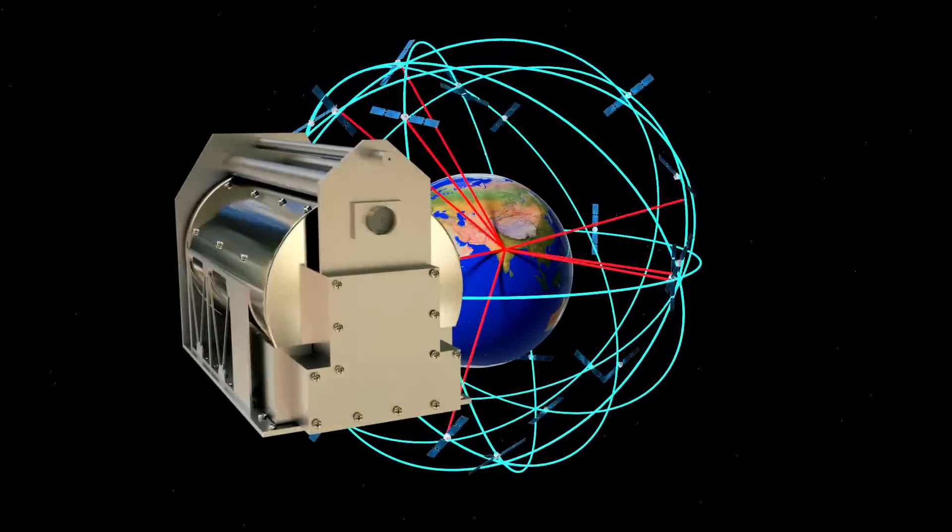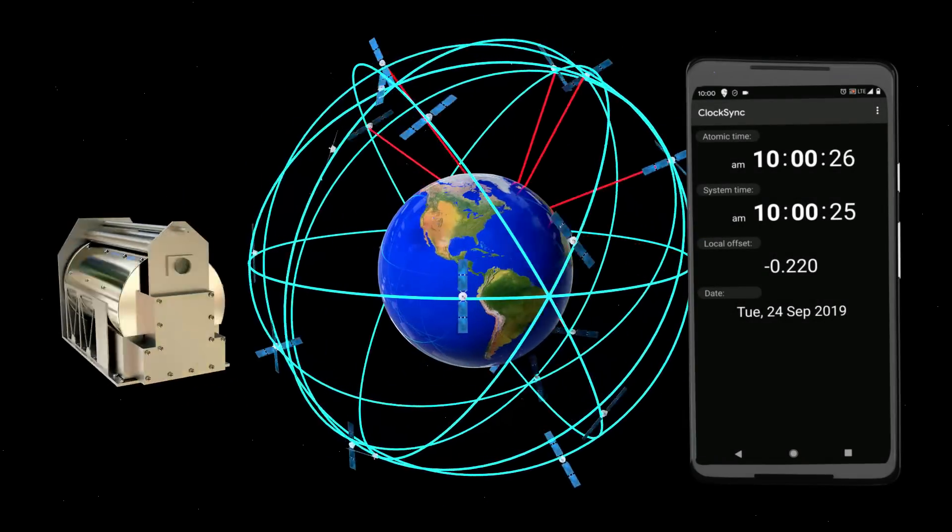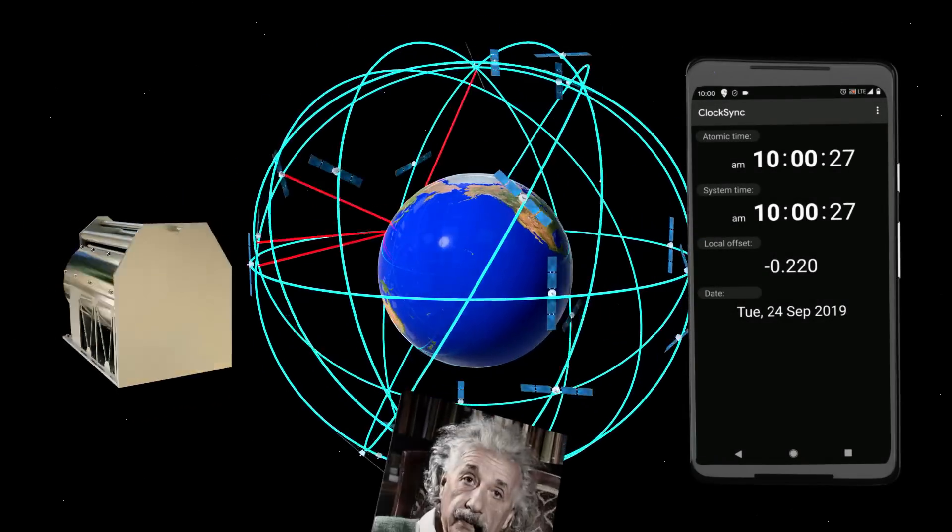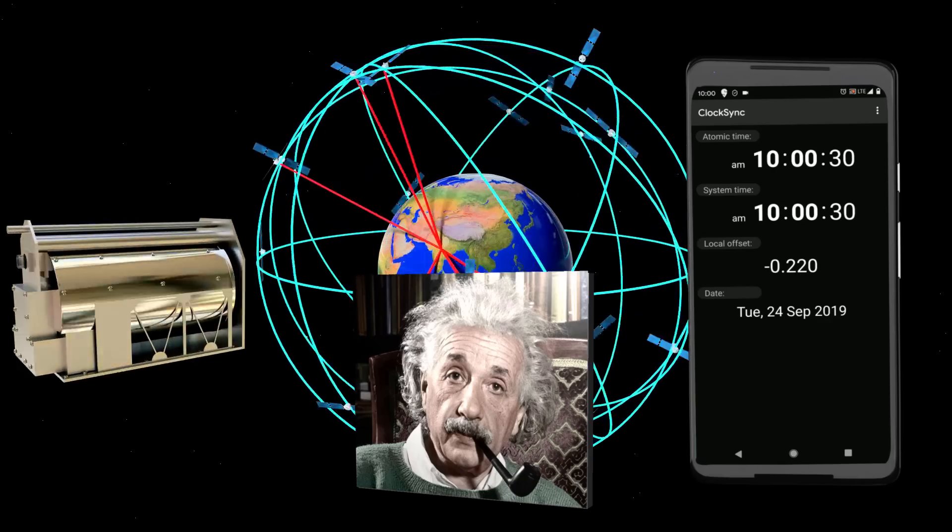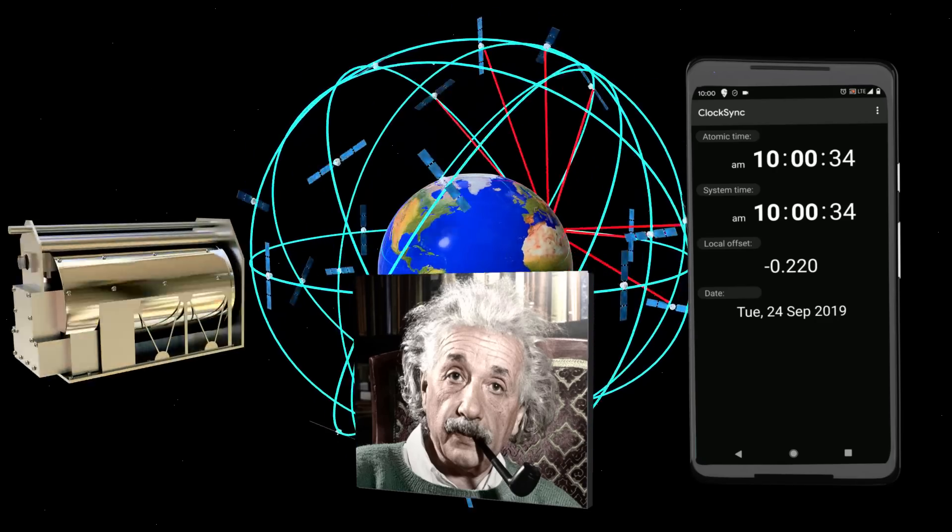It uses an atomic clock and the time error of your mobile phone is also a matter of great concern. Moreover, Albert Einstein's theory of relativity plays an important role in GPS technology. Finally, a real-life application for the theory of relativity.